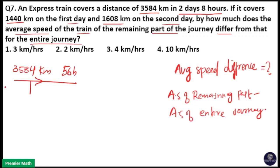First day it travels 1440 km, next day it travels 1608 km, and remaining distance means 3584 minus 1440 plus 1608. So this gives 536 km as the remaining distance.